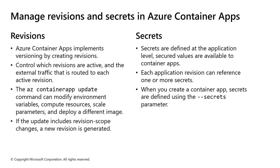Azure Container Apps uses revisions to handle different versions of container apps. A revision is a fixed snapshot of a container app version. You can use revisions to deploy a new version of your application or easily roll back to a previous version. Revision scope changes create new revisions when you update your application. You can also update your container app from a specific revision using the az containerapp update command to change environment variables, compute resources, scale parameters, and deploy a different image — all of these changes will create a new revision.